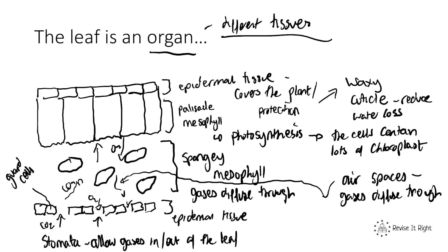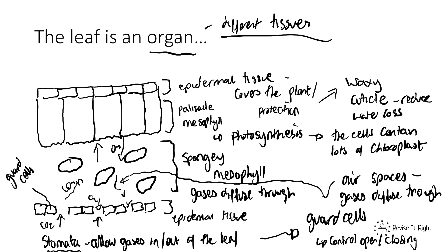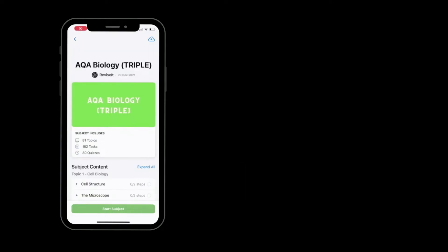The lower epidermis contains the stomata, which are adapted by having guard cells that control the opening and closing. If photosynthesis is not happening and we don't need carbon dioxide, the plant can close the stomata to ensure that not much water is lost from the leaf.